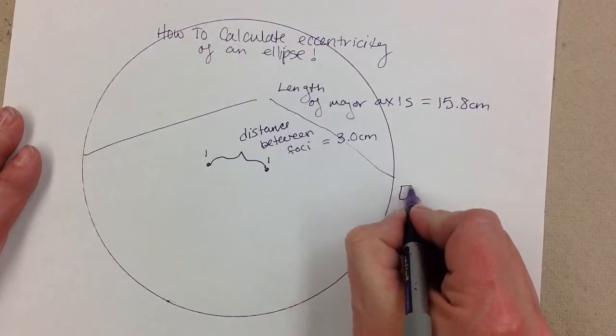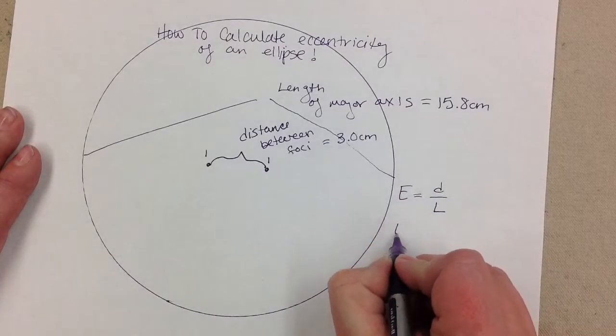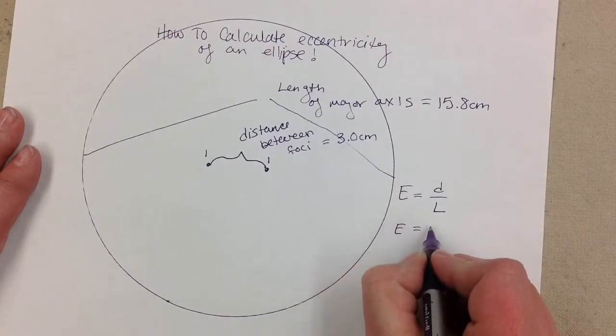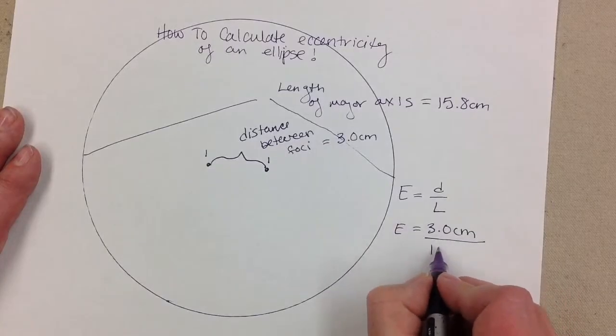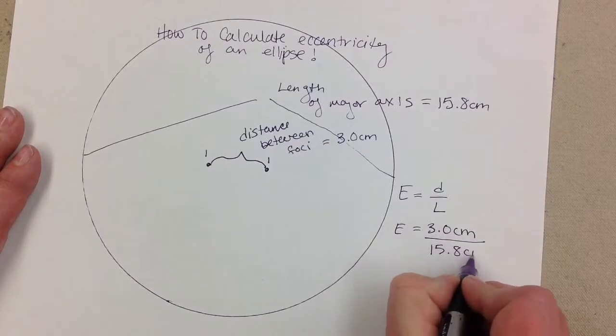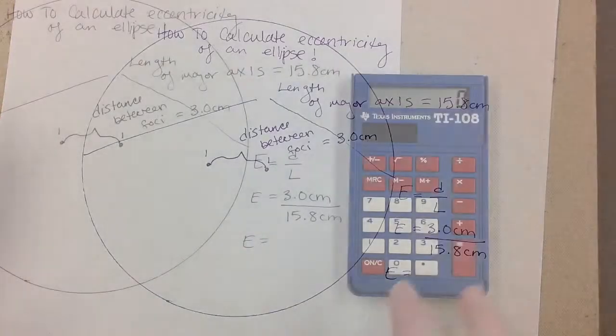So now I want to actually calculate the eccentricity value of the ellipse that I just constructed. I need to use a formula from the front of my reference table. Eccentricity equals distance between foci over length of the major axis. I substitute my data in, 3.0 divided by 15.8.